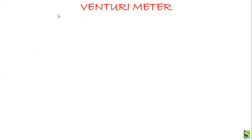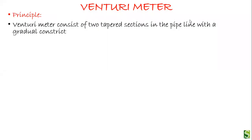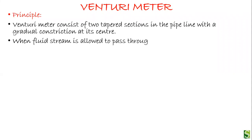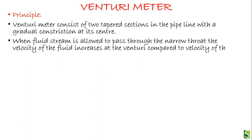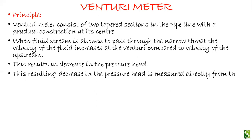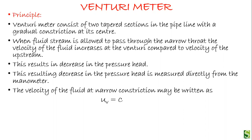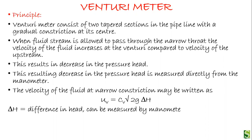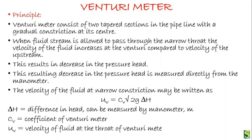Next we look at the venturi meter. Its principle: it consists of two tapered sections in the pipeline with a gradual constriction at its center — the throat. When the fluid stream passes through the narrow throat, the velocity increases compared to upstream, resulting in a decrease in pressure head. This decrease can be measured using a manometer. The velocity at the narrow constriction is: μᵥ = Cᵥ√(2g·Δh), where Δh is the difference in height, Cᵥ is the coefficient of the venturi meter, and μᵥ is the velocity at the throat.